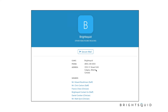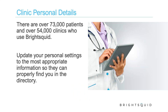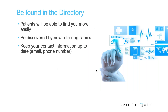The address helps people confirm they're dealing with the right clinic, since there are instances of clinics having similar or the same names. There are over 73,000 patients and over 54,000 clinics using Bright Squid — getting close to 200,000 users on the system. We want people to know who you are. We've seen instances where someone completed privacy training and received a certificate generated with the clinic's name rather than their individual name — which has real privacy implications.